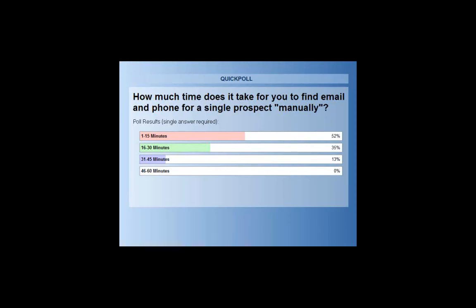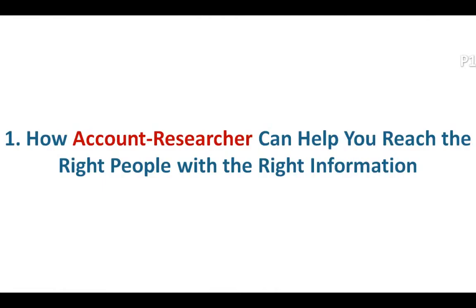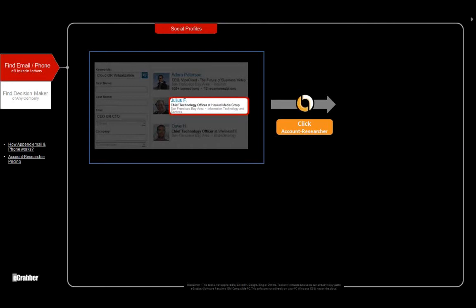We will be sharing the results with you. Yes, between 1 to 15 minutes — so most people take about less than 30 minutes to find an email address and a phone number. Now, that's a lot of time. Think about it — in 30 minutes you could be making maybe 29 different calls. So why does it take so long? You need to go to the internet, go to Google, go to so many places.